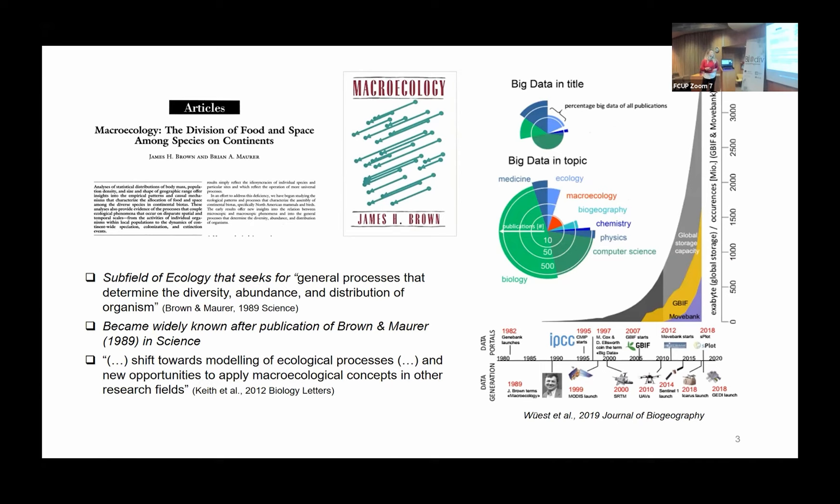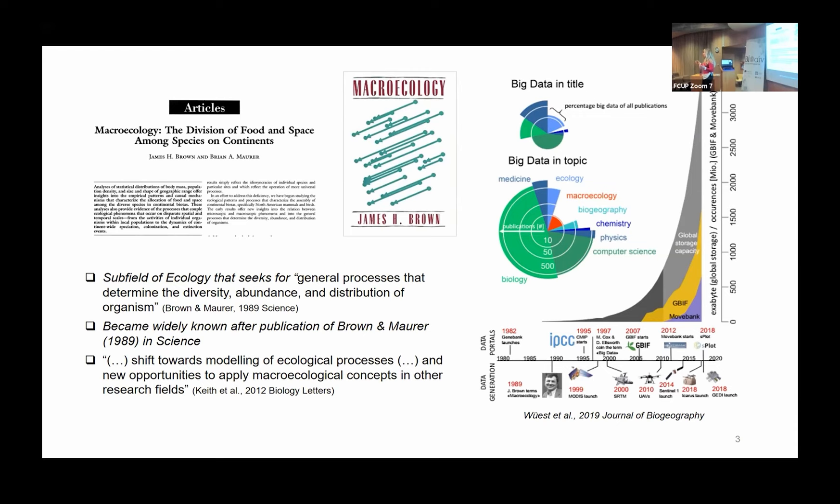Since then, a lot of things have happened. A lot of data had been accumulated. And now we have a macroecological science very different from what we had before. I will try to give you some examples of things that we can do in macroecology going beyond the descriptions of large-scale patterns of biodiversity.